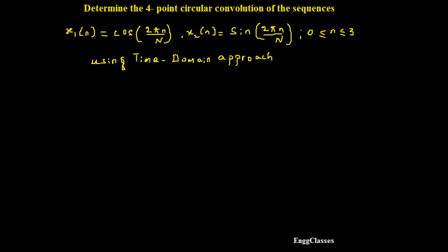Hello everyone, welcome to NG Classes YouTube channel for a video lecture series on digital signal processing. In this video we will determine the four-point circular convolution of the given sequences, where x1(n) = cos(2πn/N), x2(n) = sin(2πn/N), with n varying from 0 to 3, using the time domain approach.